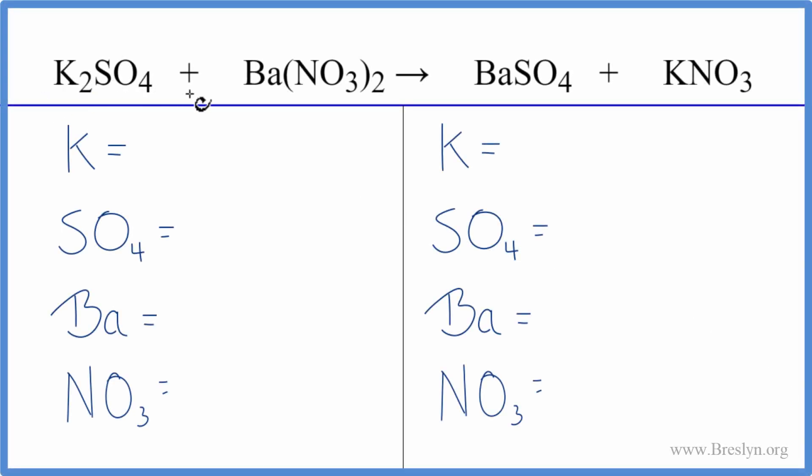In this equation we have potassium sulfate plus barium nitrate. Let's balance this equation and we're going to do a little trick here to make this easier. This is a double displacement reaction. The potassium and the barium are switching places. So watch how we do this.